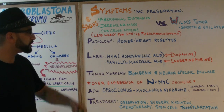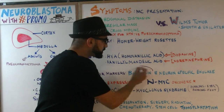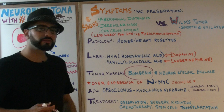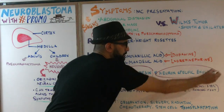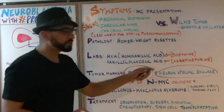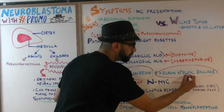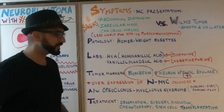Tumor markers — simple stuff, just memorize them. Bombesin is one tumor marker, and neuro-specific enolase, which will be described as neuro-specific enolase positive, is the other. Memorize these two facts.